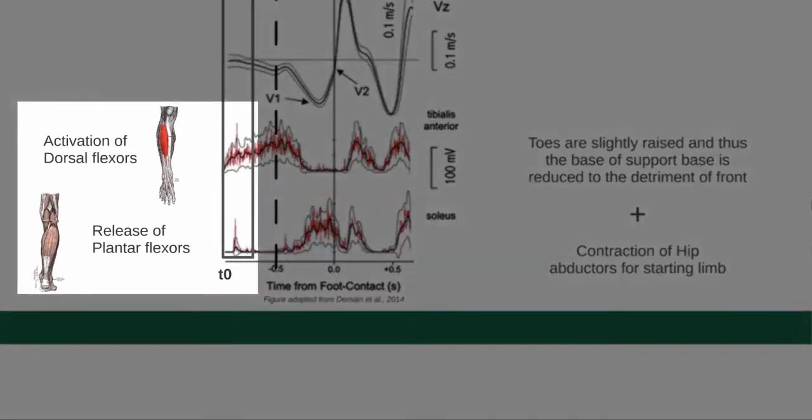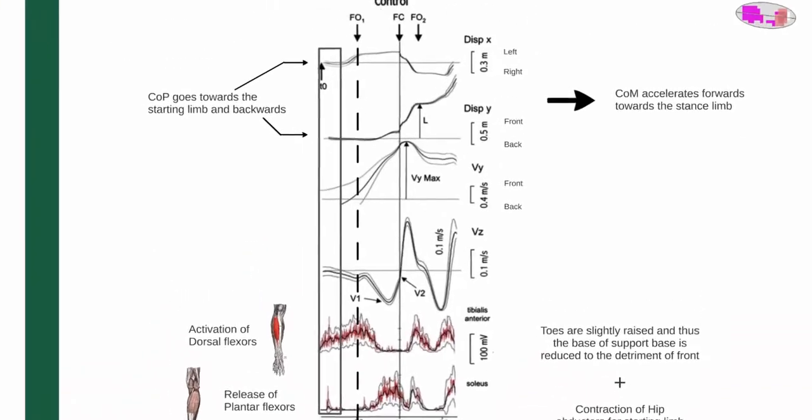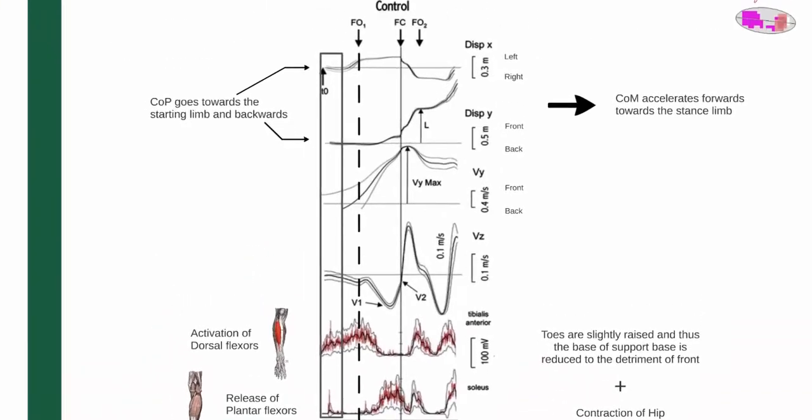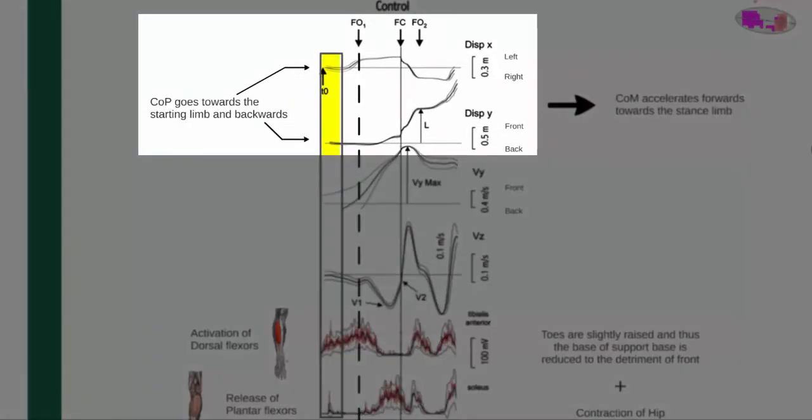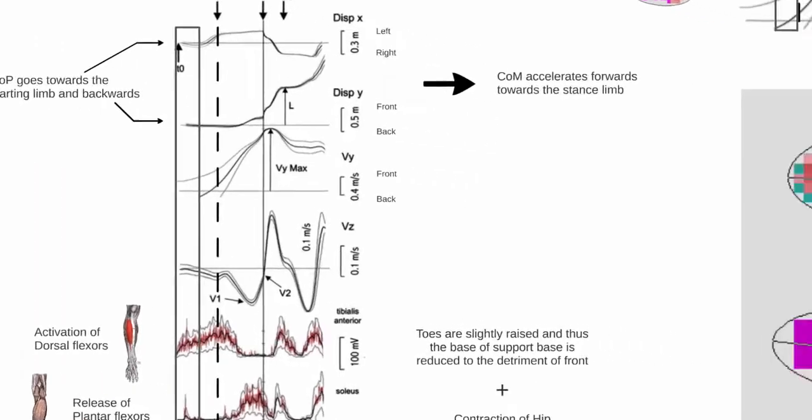Due to the relaxation of the plantar flexor muscles, the soleus, and activation of the dorsiflexor muscles, the tibialis anterior, the toes are slightly raised and thus the base of support is reduced. The center of pressure then goes backwards and towards the starting foot, i.e. the first oscillating limb, due to the contraction of the ipsilateral hip abductors, which induce acceleration of the center of mass forward to the support limb.